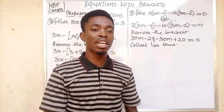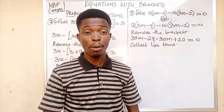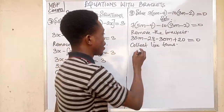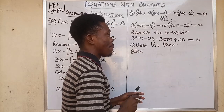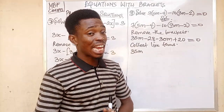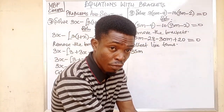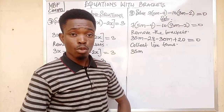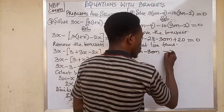When collecting like terms, variables stay on the left-hand side and constants move to the right-hand side. The first variable is 35m, the next is minus 30m — both are already on the left-hand side, so none of their signs change. We pull down 35m minus 30m, then place the equals sign.